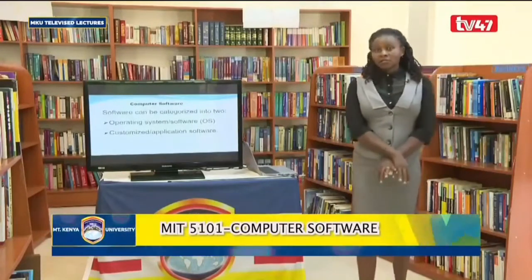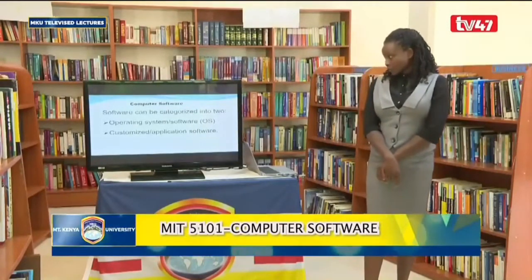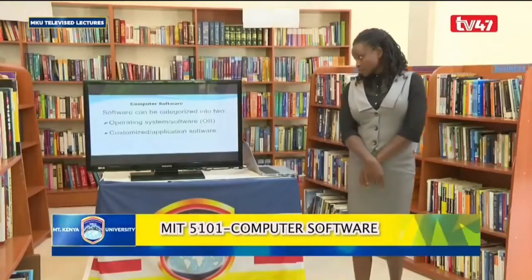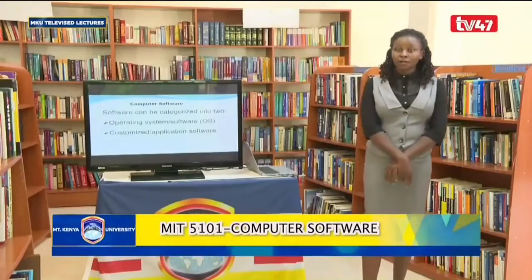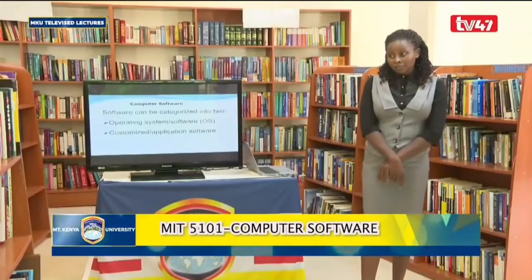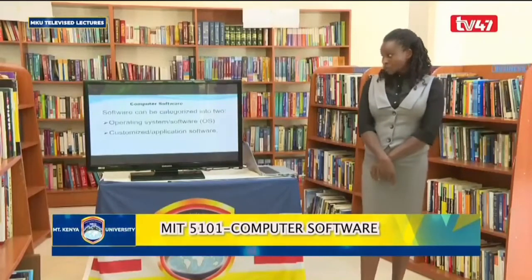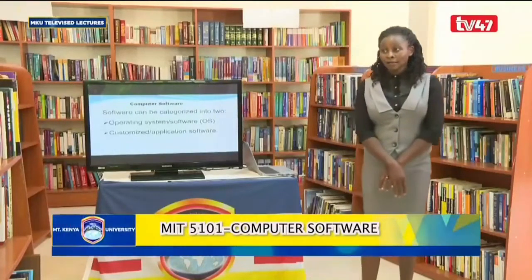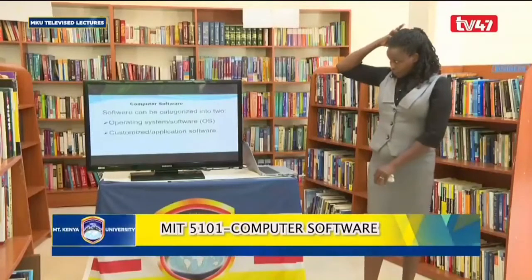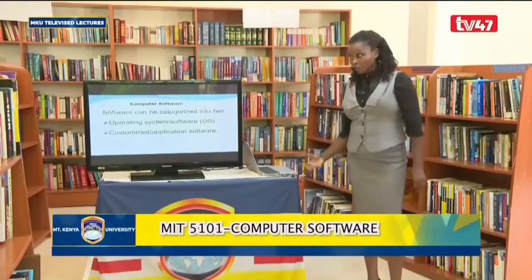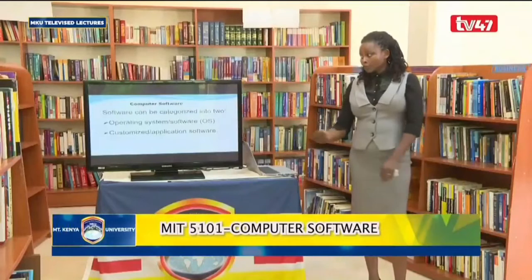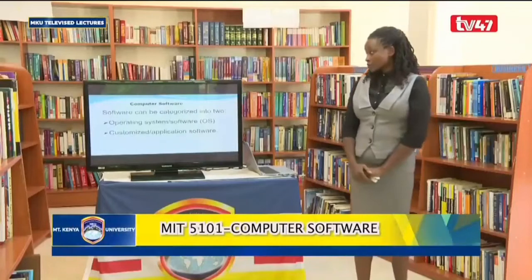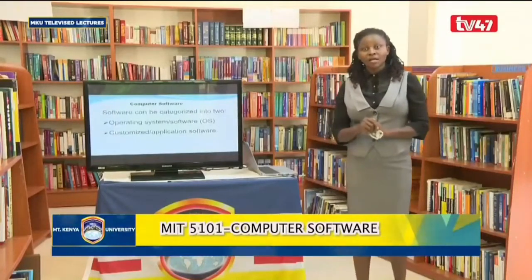There are two categories of computer software. Computer software is a collective term, and each category is inclusive of other sub-components. We have two categories: operating systems — what we usually abbreviate as OS, or operating software — and what we commonly call application software. Those are the two major categories.